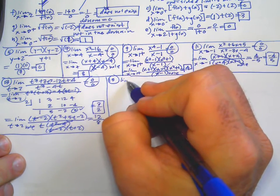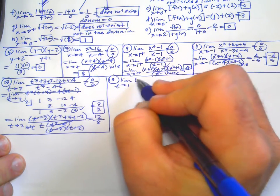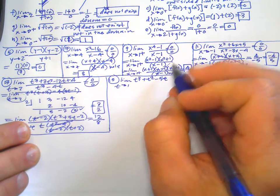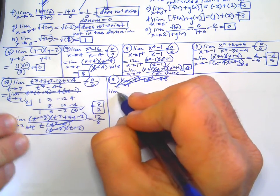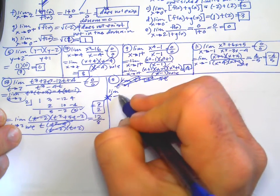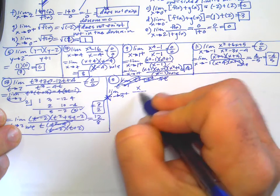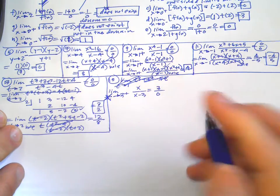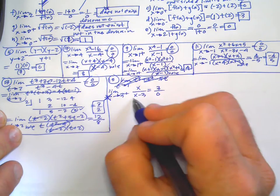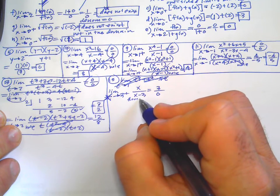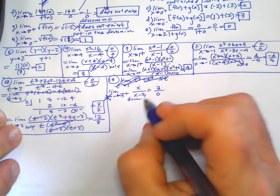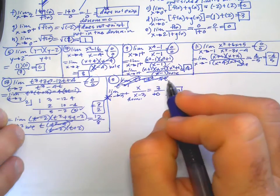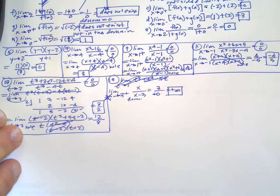Number 15: limit as X goes to 3 from the right of X over (X minus 3). If you plug 3 in, you get 3 over 0. But it makes a difference what kind of zero — is it positive or negative? 3 plus means we're approaching from the right, like 3.001. The denominator is a very small positive number, so it's going to be positive infinity. Technically does not exist, but that's the answer we're going to write.